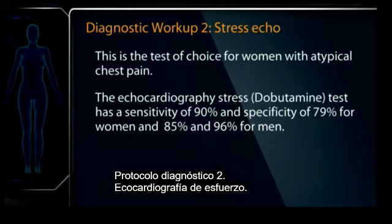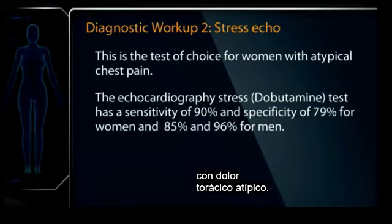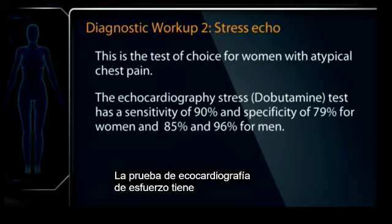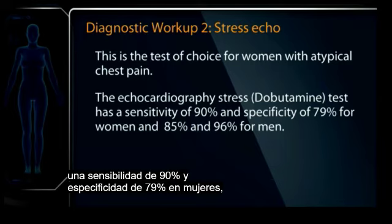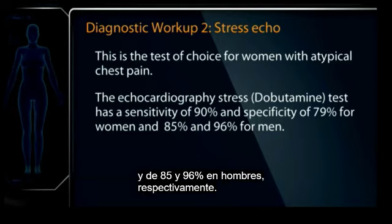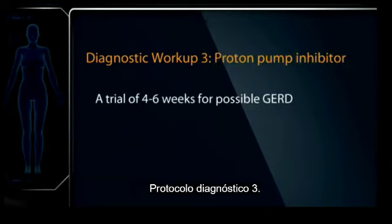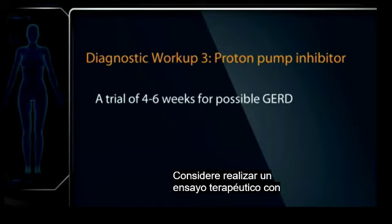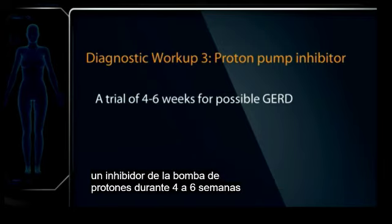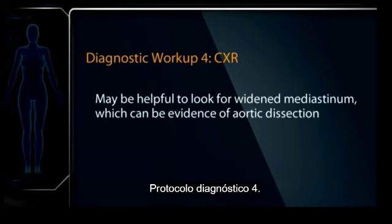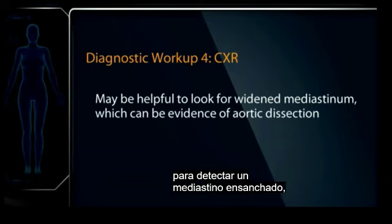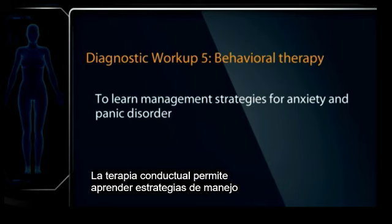Stress echo — this is the test of choice for women with atypical chest pain. The echocardiography stress test has a sensitivity of 90% and specificity of 79% for women, and 85% and 96% for men. Consider a trial of a proton pump inhibitor for four to six weeks for possible GERD. Chest x-ray may be helpful to look for a widened mediastinum, which can be evidence of aortic dissection. Behavioral therapy to learn management strategies for anxiety and panic disorder.